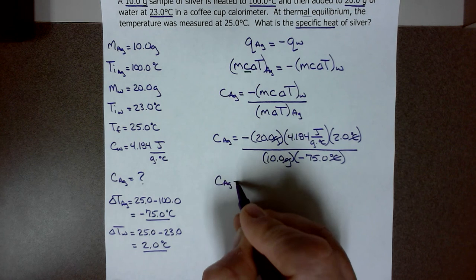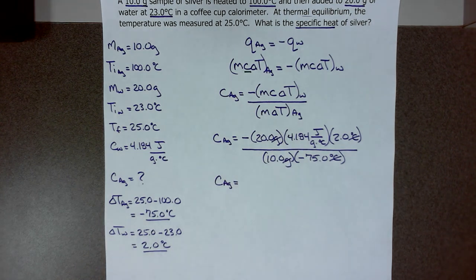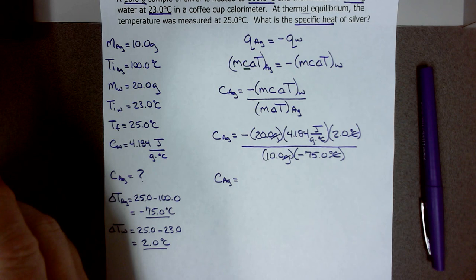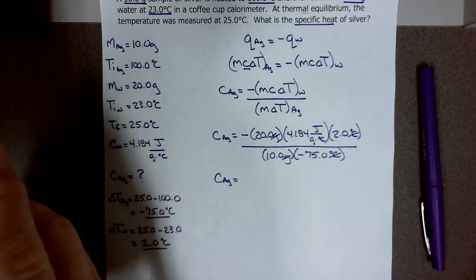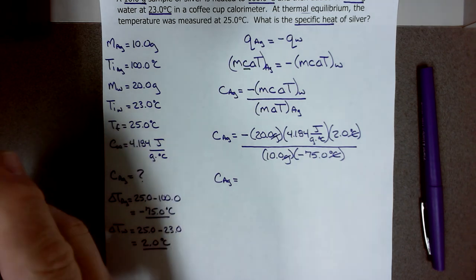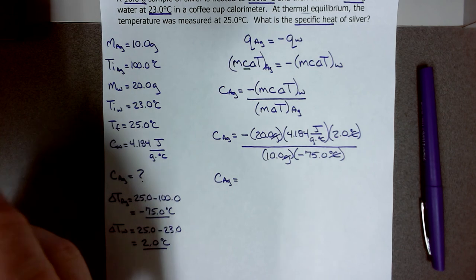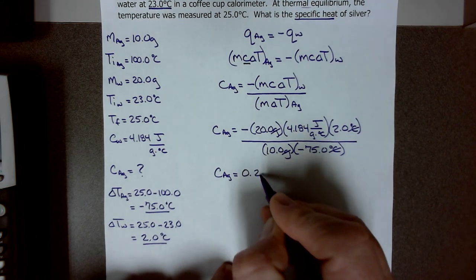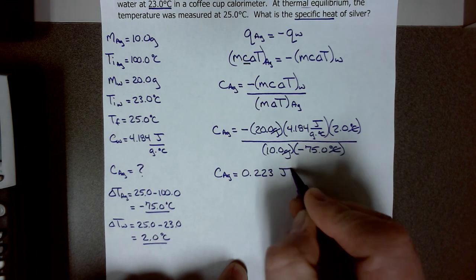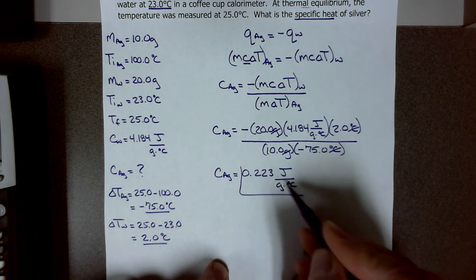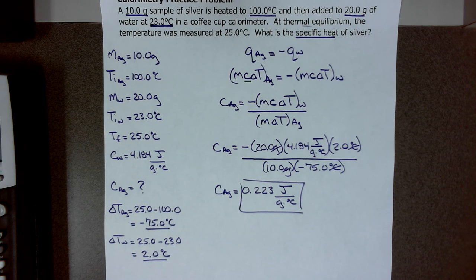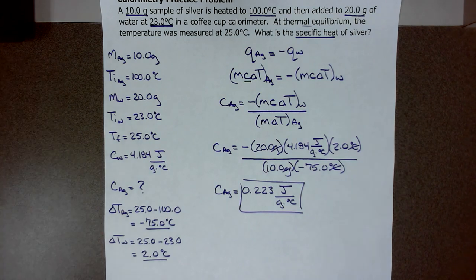I'll calculate: 20 × 4.184 × 2 divided by 10 divided by 75. The specific heat of silver is 0.223 J/(g·°C). And that's how we solve problems using calorimetry for heat transfer between two substances in thermal contact. I'll see you next video.